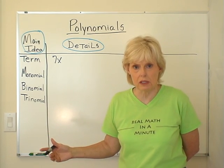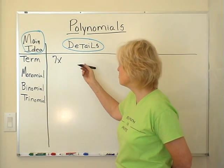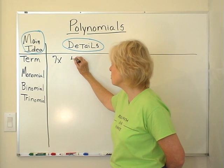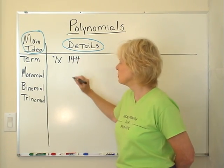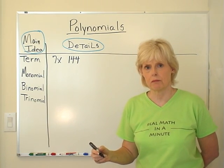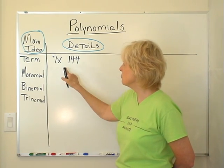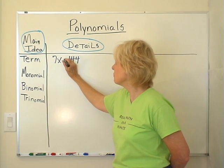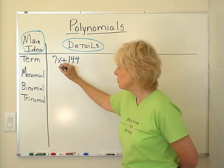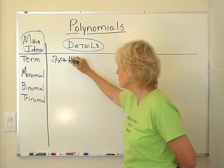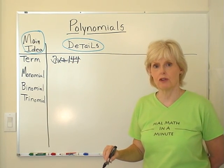It can be really big. It can be small just like the number 4. That is a term. The number 144, that is a term. That's one term. If I were to add that together, like if I were to put 7x plus 144, that is no longer a term. That has actually become two terms.